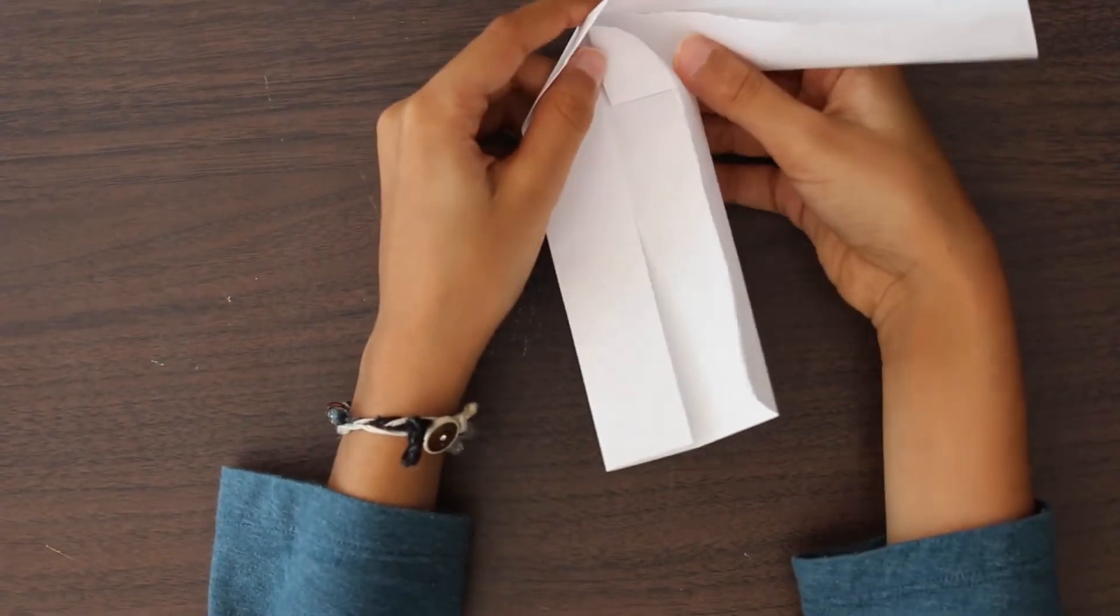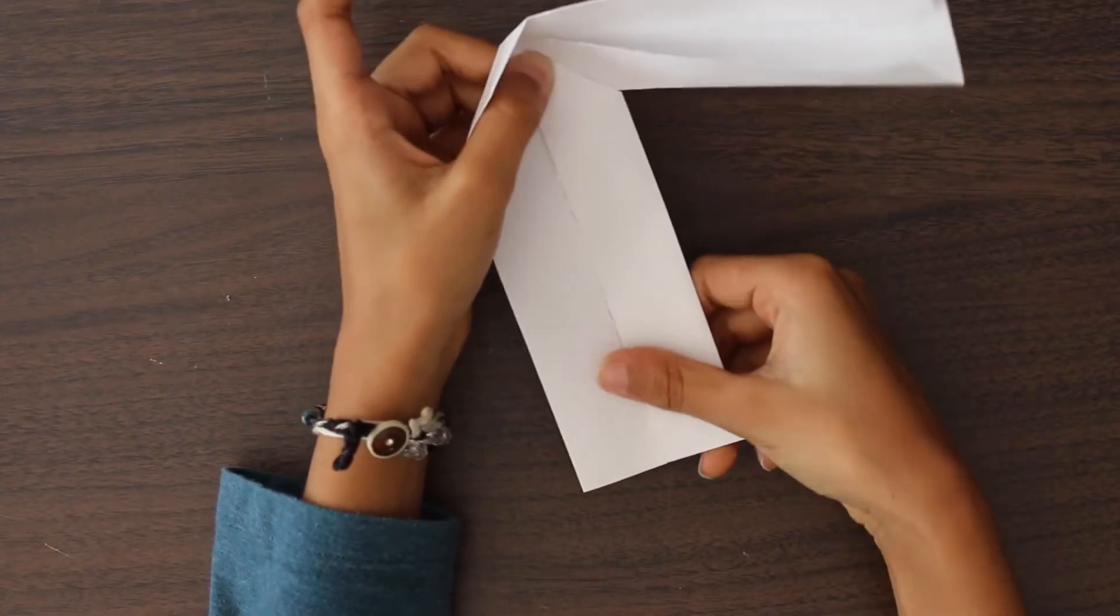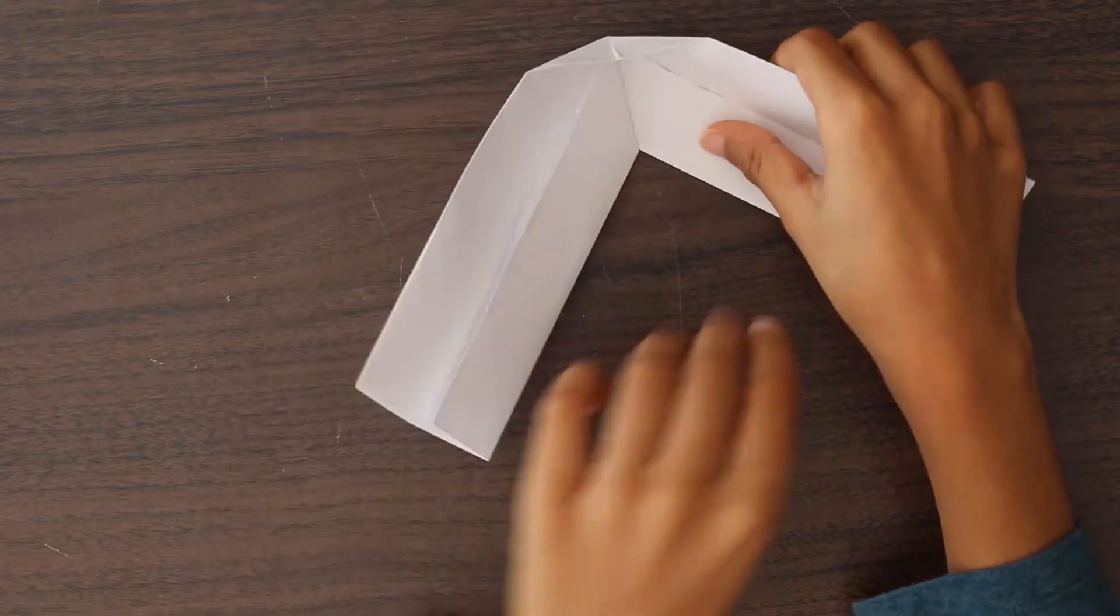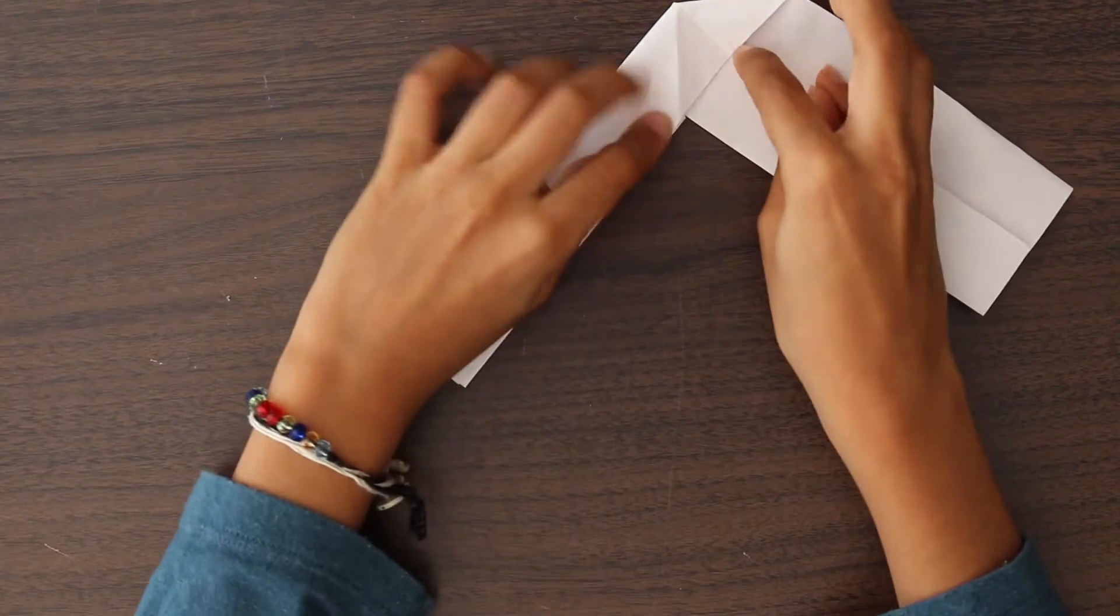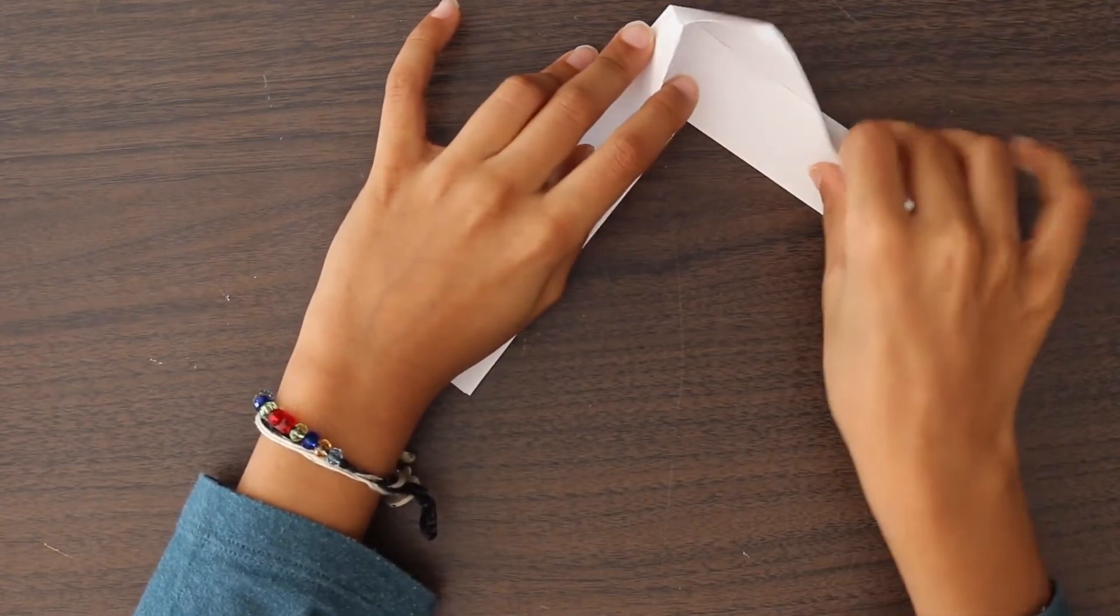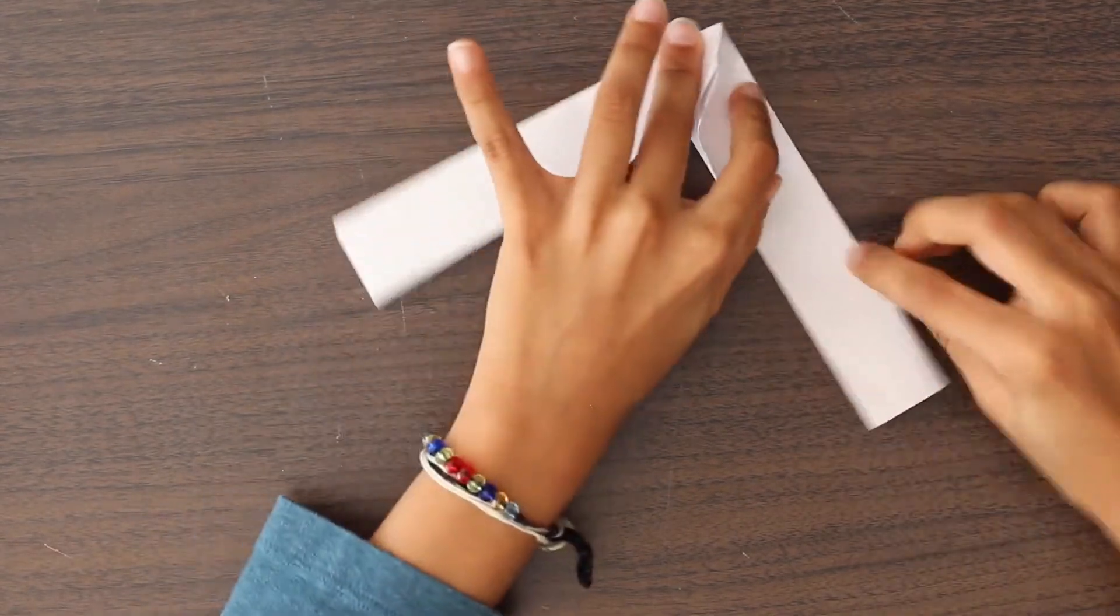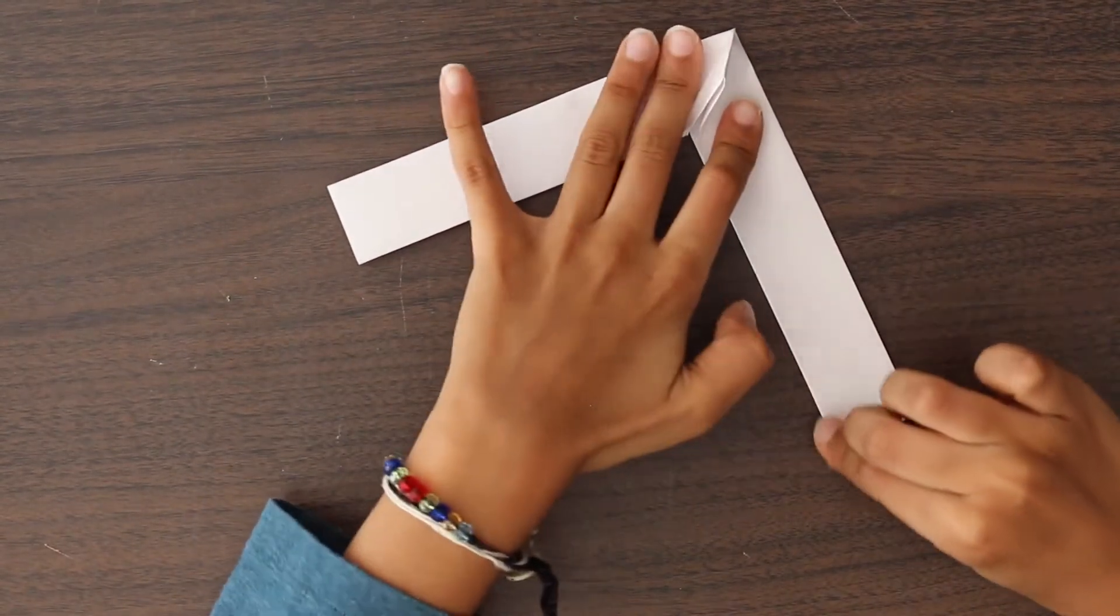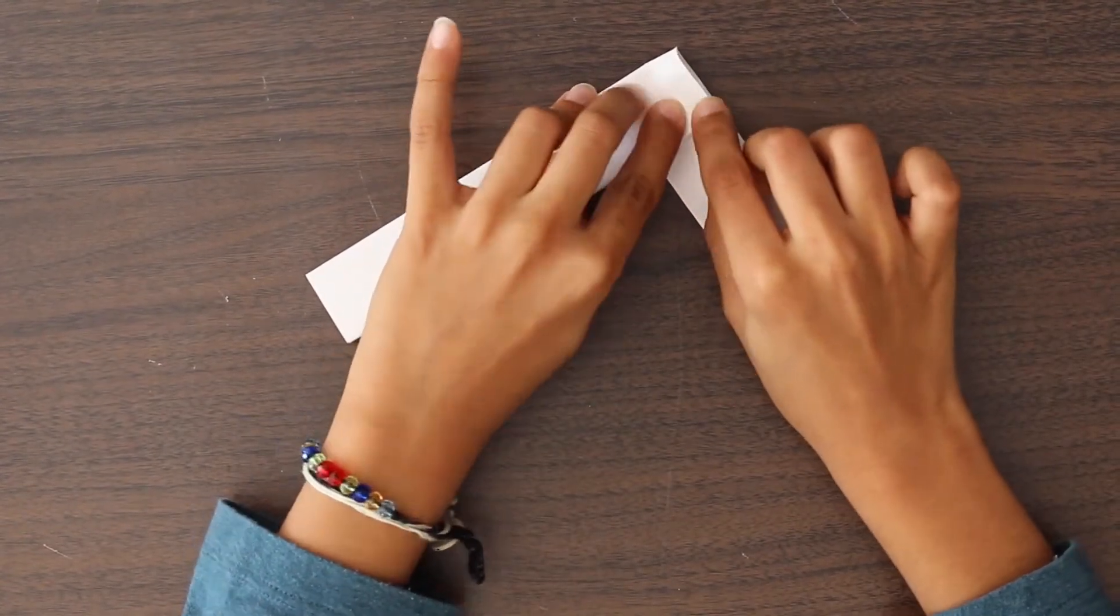Now, fold that down. Close the right flap first and just stick it out. And then close the left flap. And fold the right flap to the left side.